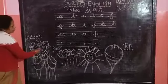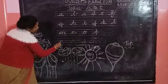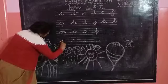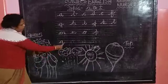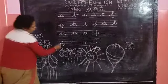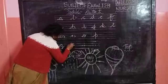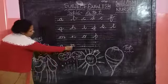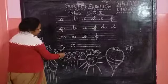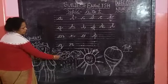Now you see how to write. Small Q for Queen. Small M.